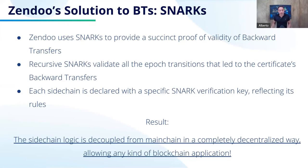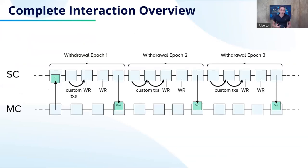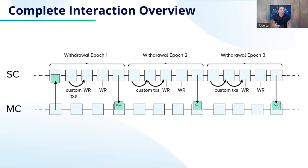Let's look at a typical interaction between the main chain and the sidechain. Starting from the left, a forward transfer happens on the main chain — some user sends coins into the sidechain. This forward transfer gets synchronized into a sidechain block. Then a custom transaction happens in the sidechain — the forward transfer is spent by the owner and sent to someone else. Then that user posts a withdrawal request. The withdrawal requests are collected in a certificate at the end of withdrawal epoch one, which is then sent to the main chain and synced within a main chain block, and the user will have their coins available to be spent.